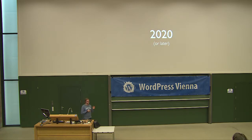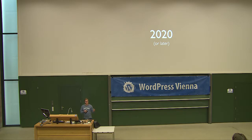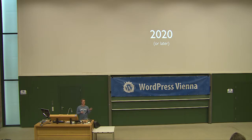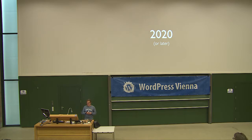In his keynote, Matt mentioned that Gutenberg phase four is targeted for the year 2020 and beyond. And given that we are still in phase two of Gutenberg, where widgets are slowly being converted to blocks, 2020 is probably a bit too optimistic. But still, people have already started to speculate about the impact of core offering its own standardized solution for multilingual sites, and today we are going to speculate as well.